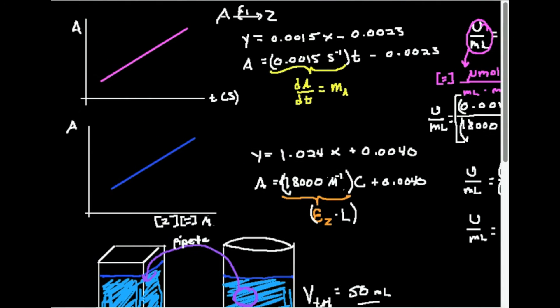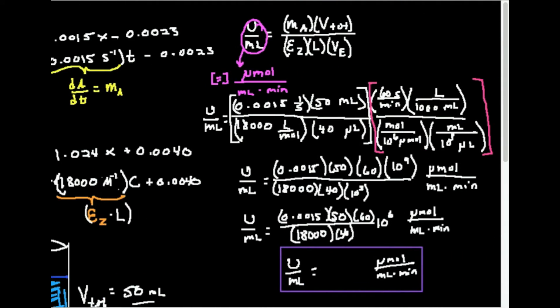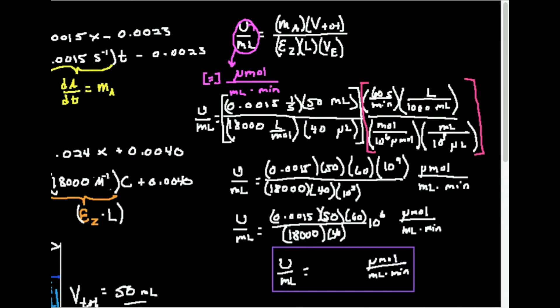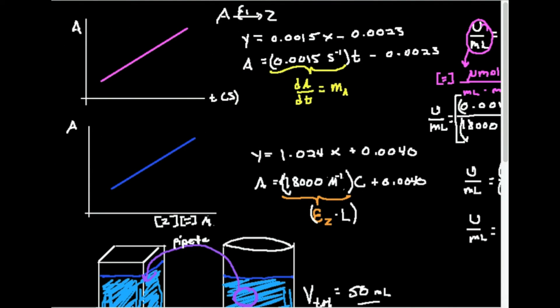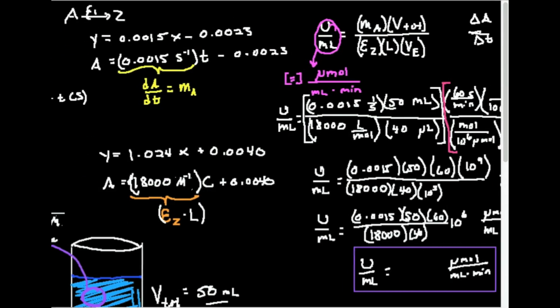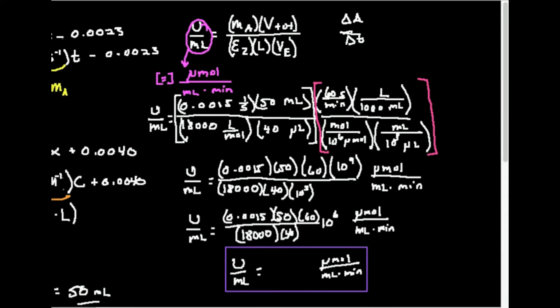Alright. So let's go about calculating the U per ml. That's what we're going to do first. Just keep in mind U per ml is units of micromoles per milliliter per minute. So what is my M sub A? Remember that's my delta A, delta T. That's from the activity assay. That M, if you come over here, is apparently 0.0015. And since this is in seconds, it's going to be 0.0015 per second. That's what you see here.